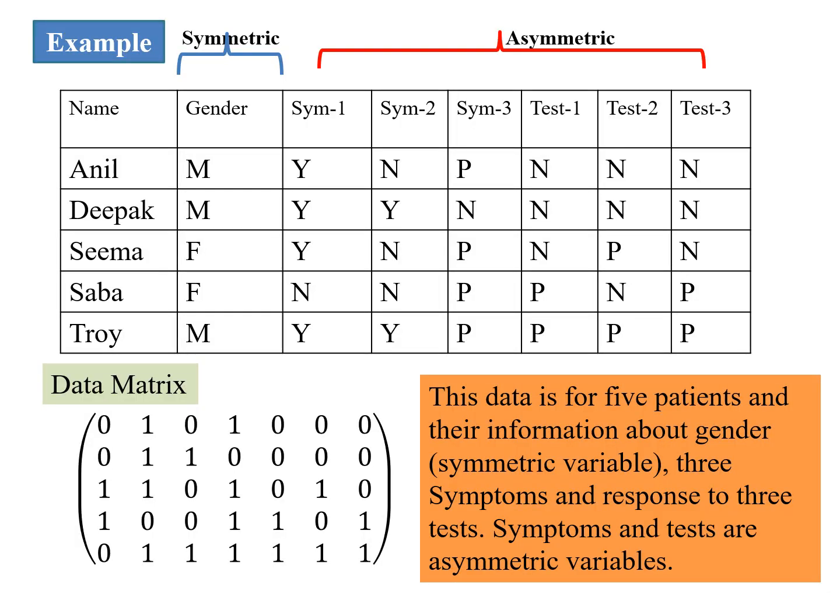Now we take an example. We have taken a data matrix with 5 data points or data samples. We have in all 7 variables, out of which the first one, gender, is symmetric because you can easily code m or f as 0 or 1, whichever we wish to code as 0. So here you can see that I have coded m as 0 and f as 1.